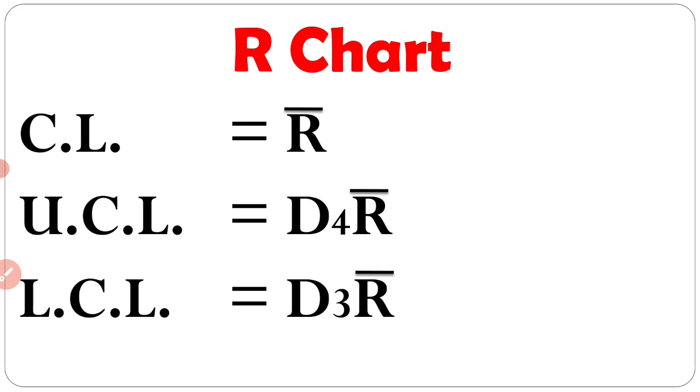For R chart, these three formula we are remember. UCL is equal to D4 R bar. LCL means D3 R bar. And CL is equal to R bar.